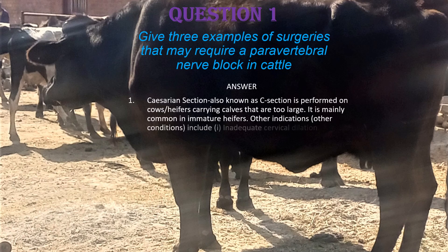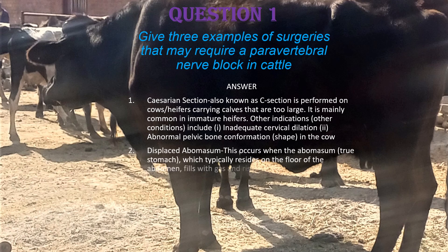The first is the cesarean section, also known as a C-section. This is performed on cows or heifers carrying calves that are too large, so cesarean sections are mainly common in immature heifers due to large calves. Other indications include inadequate cervical dilation and abnormal pelvic bone conformation or shape in the cow.